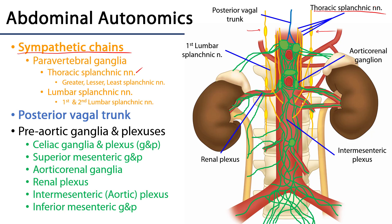These preganglionic fibers are going to synapse in prevertebral ganglia, some examples of which are visible here. The thoracic splanchnic nerves consist of the greater, the lesser, and the least splanchnic nerves. There are also lumbar splanchnic nerves — we can see one arising from the first lumbar ganglion and another from the second lumbar ganglion — and these are going to contribute fibers to various autonomic plexuses.